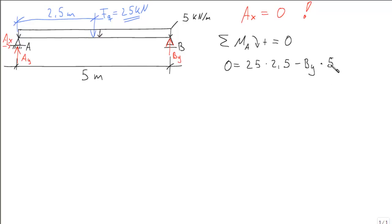Now we bring this to the other side. So we have By times 5 is equal to 25 times 2.5. So By is 25 times 2.5.